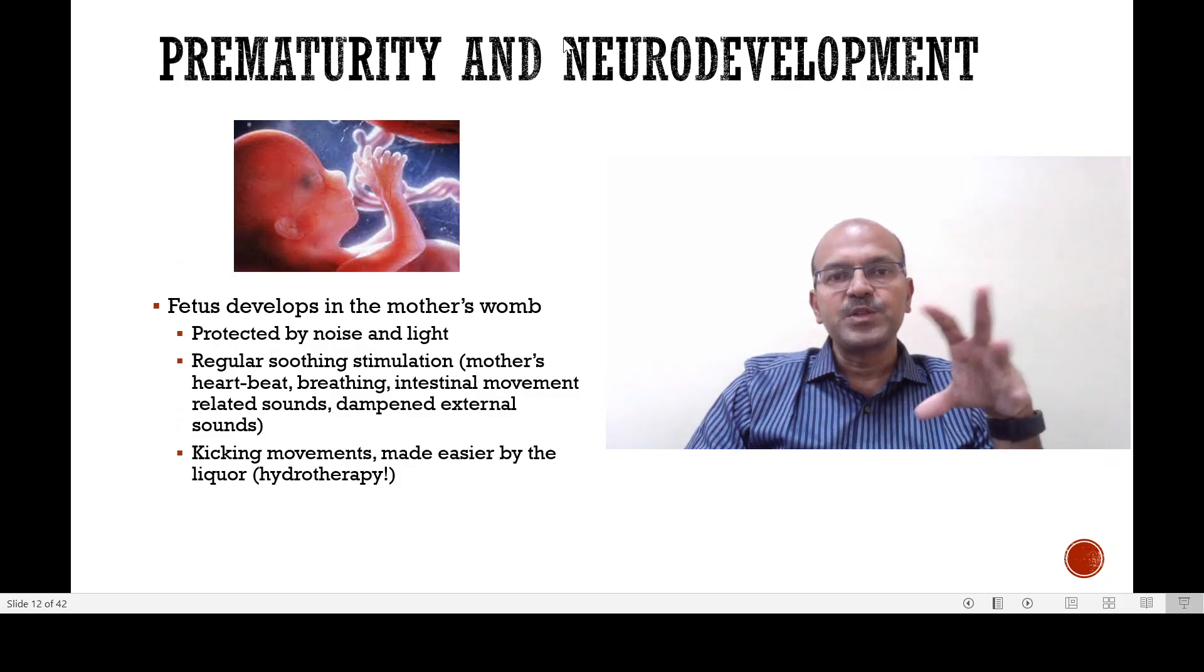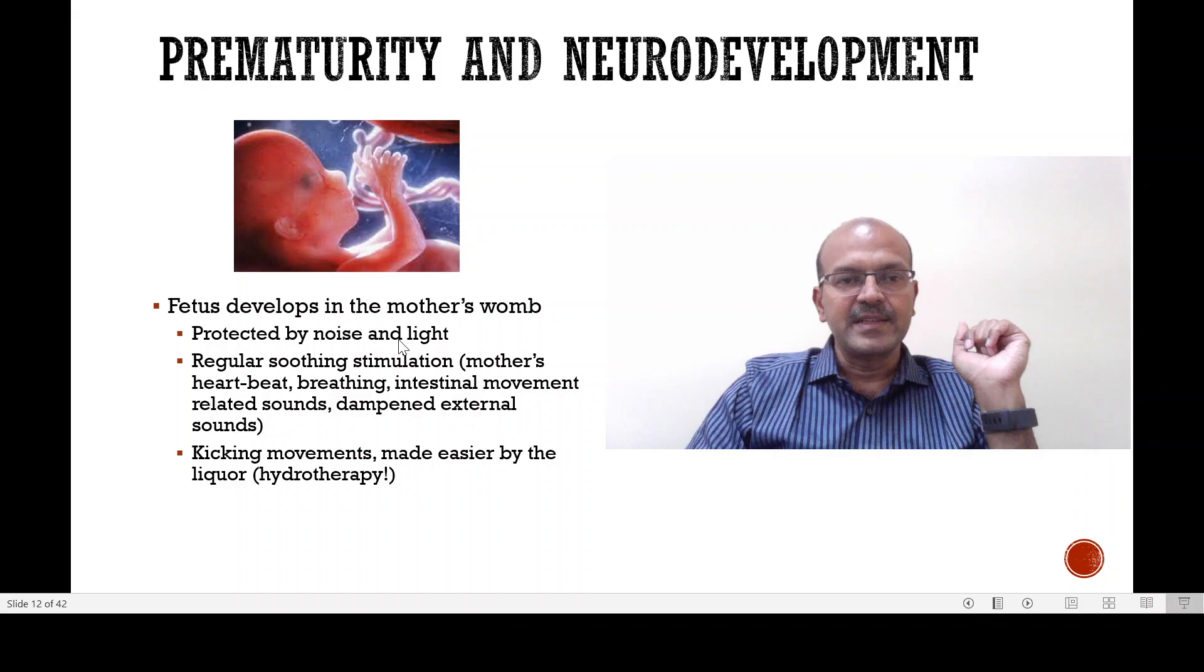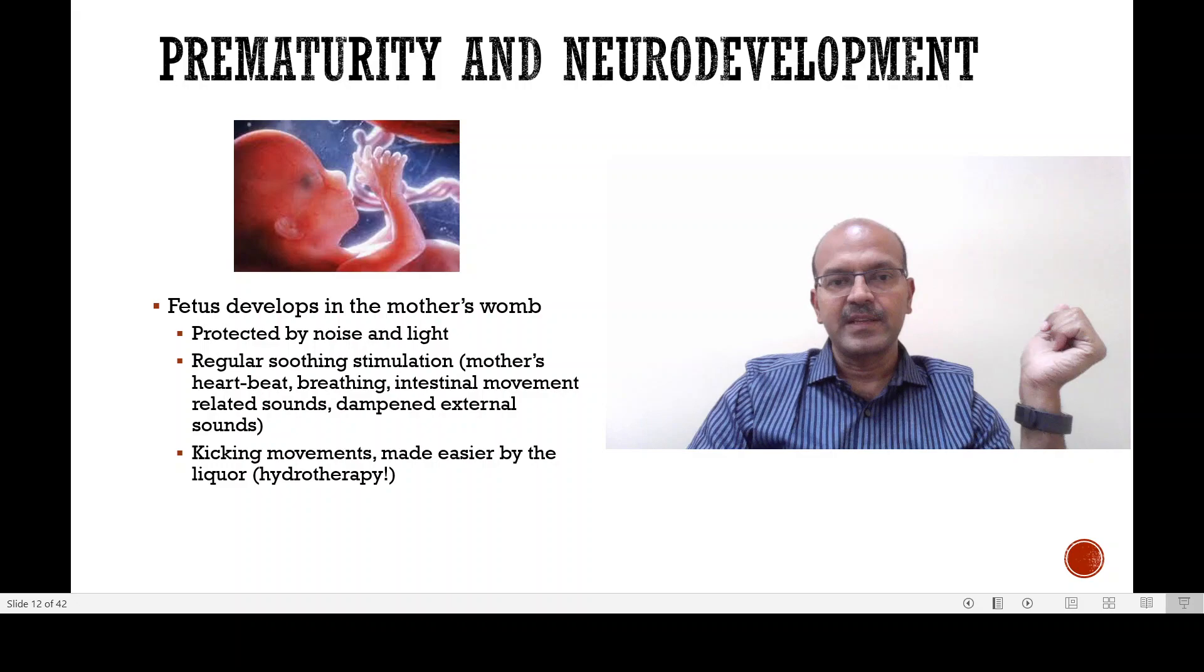So why is prematurity linked to neurodevelopment? The fetus develops in the mother's womb as an environment which is very conducive to the actual growth and development of the fetus. The baby is protected from noise and light. There is regular soothing stimulation from the mother's heartbeat, the breathing of the mother, the diaphragm movements, intestinal movement related sounds and dampened external sounds from the liquor. The baby is floating and the kicking movements are made easier by the fluid around it, like having hydrotherapy for people recovering from stroke.